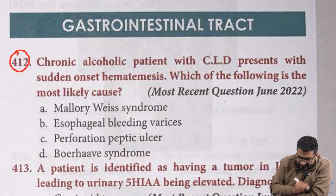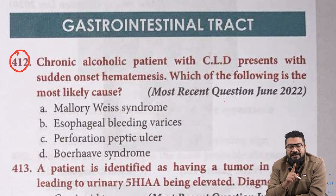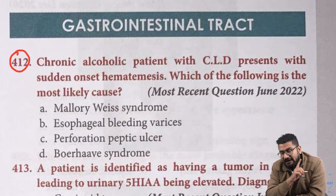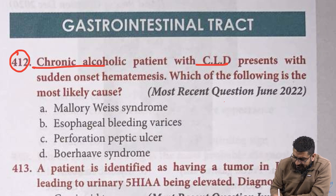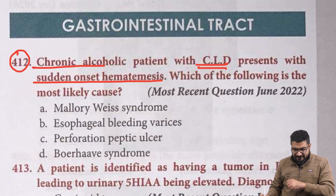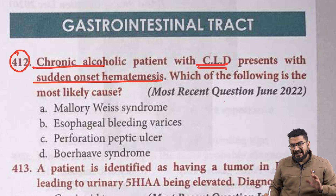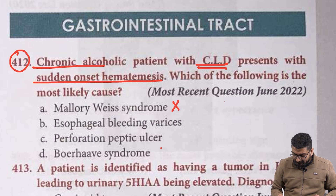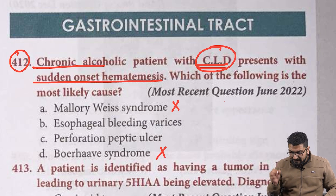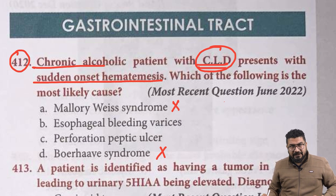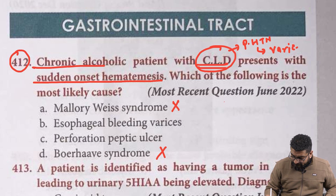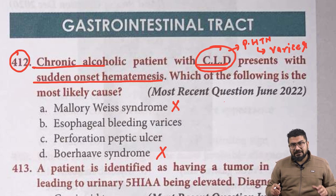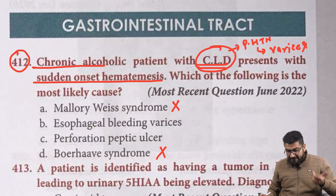Starting with the first question: a chronic alcoholic patient with CLD presenting with sudden onset hematemesis. Both peptic ulcer and Mallory-Weiss can present with hematemesis but have an acute history, so these are ruled out. When the question mentions CLD — chronic liver disease — it is a chronic disease. In CLD, portal hypertension develops, which leads to formation of varices. These esophageal varices may bleed.